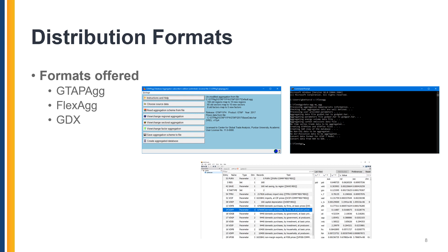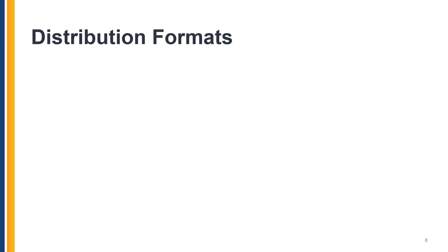Thus far, we've covered what the GTAP database is, the key features of version 11, and the different uses and extensions of the database. So now let's talk briefly about how the database is distributed to users. Since the database is rarely used in disaggregated form, the Center for Global Trade Analysis offers a few types of distributions to help users aggregate the world economy.